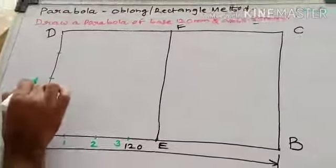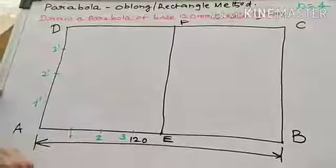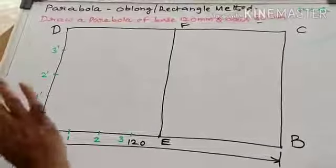Naming it as 1 dash, 2 dash, 3 dash. After dividing this.